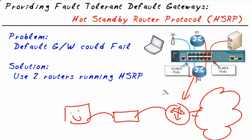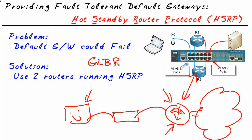So what happens if this default gateway fails? The customer is out of luck unless we deploy some fault tolerance for this layer 3 default gateway functionality. There are several options we can use. One option is HSRP, which I'll be demoing today. Another option would be the Gateway Load Balancing Protocol. And another one that's an open standard is the Common Address Resolution Protocol. All three of these options provide layer 3 fault tolerance for our customers.